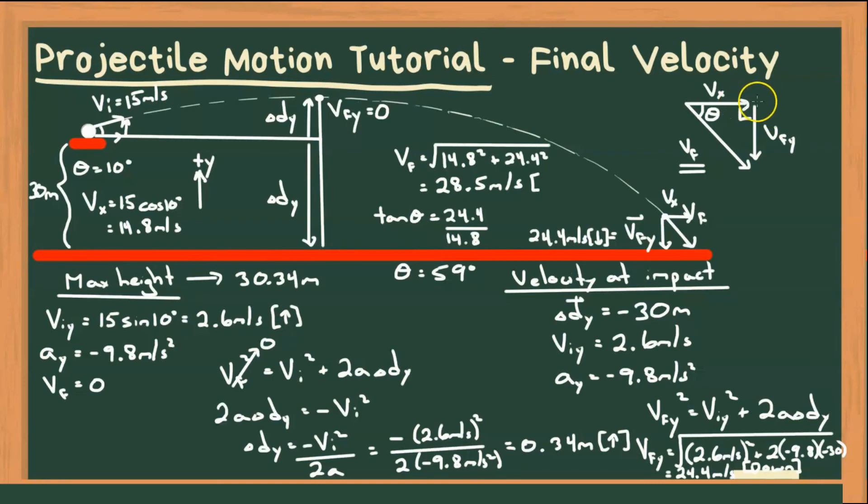So we can finally say our final velocity is 28.5 meters per second. And we don't use north, east, south, and west, because this is down, not south. So we say 59 degrees below the horizontal.